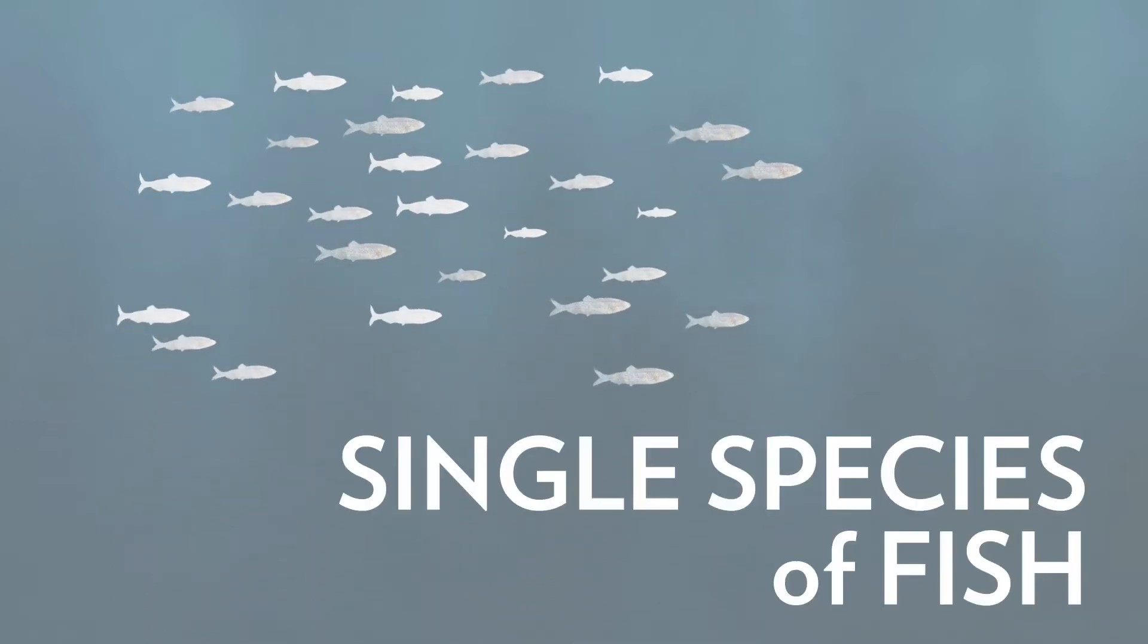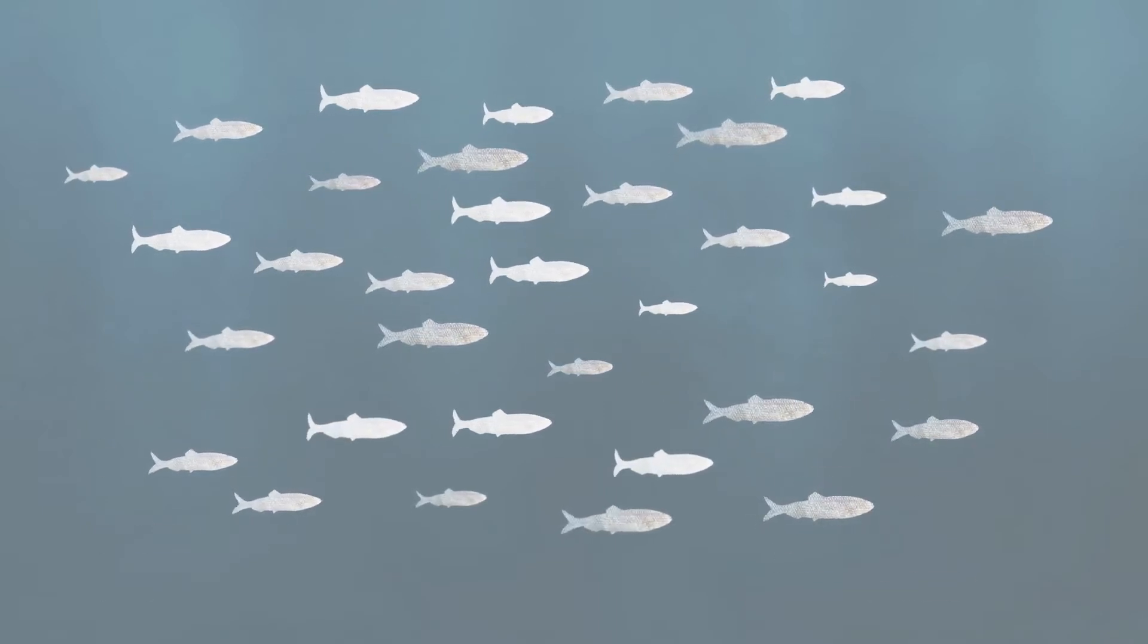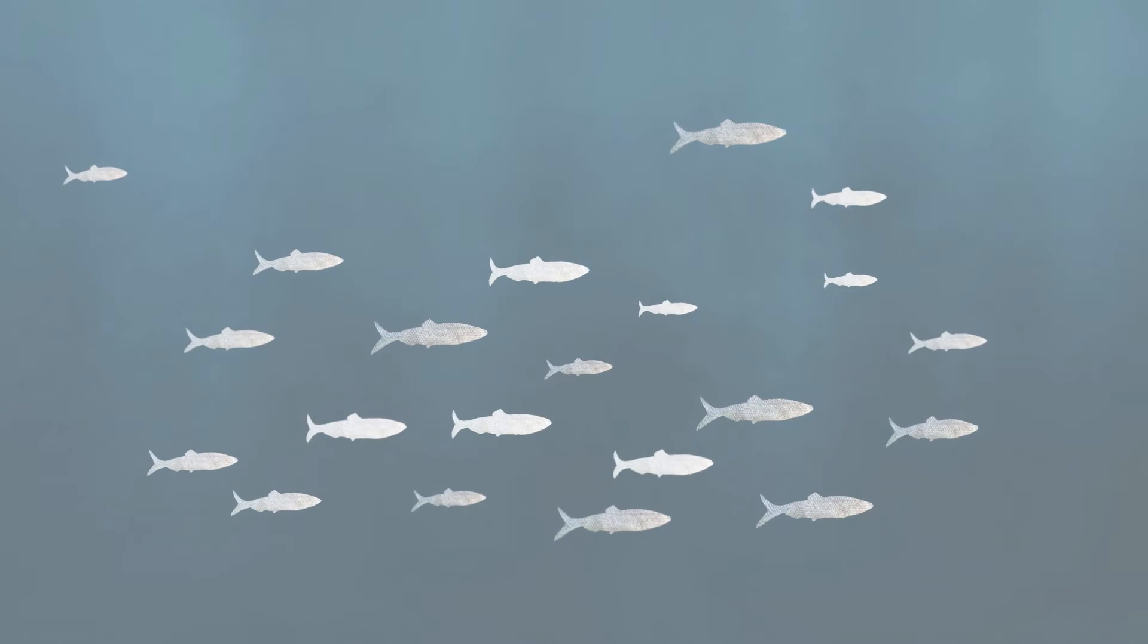Most of these models reduce complexity by focusing on a single species of fish. By estimating deaths and births, among other factors, the models calculate how many fish can be caught without depleting the population.